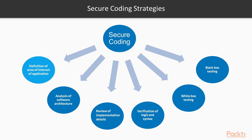Next is analysis of software architecture — analyzing the software architecture for obvious security flaws and ensuring confidential data is protected via proper authentication and authorization techniques. After that is review of implementation detail — reviewing the code using secure coding techniques and ensuring peer review is done with a view to finding security holes. Then we have verification of logic and syntax, which reviews code logic and syntax to ensure there are no obvious loopholes in the implementation.